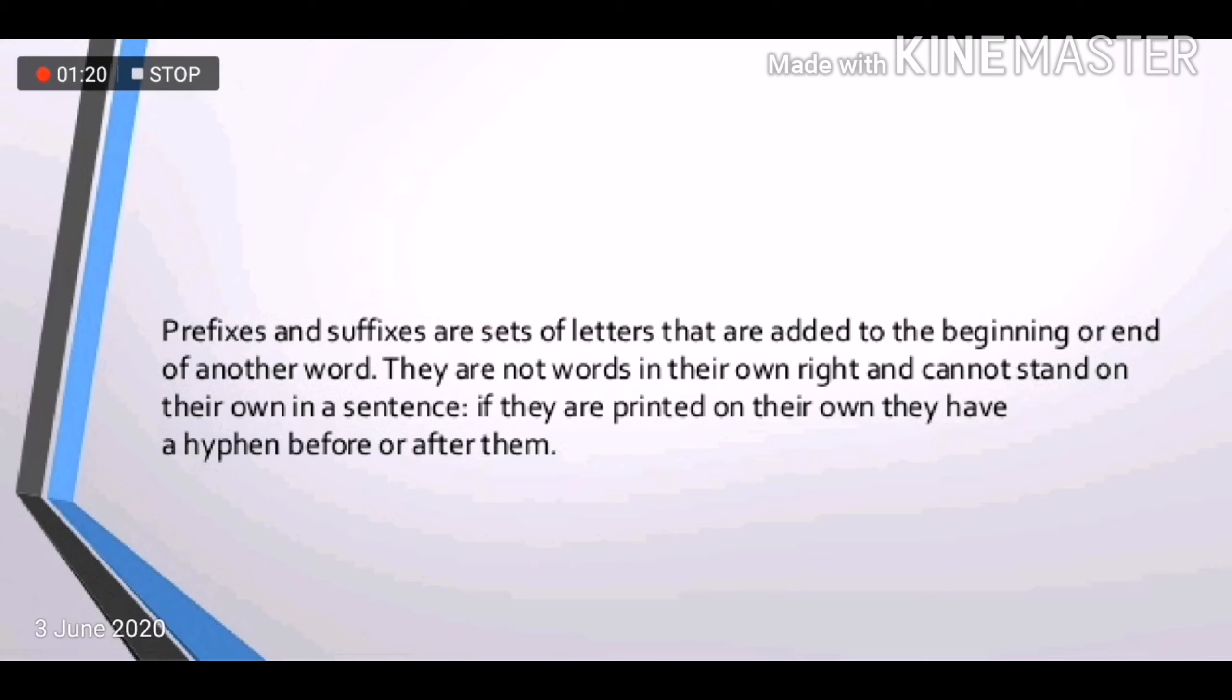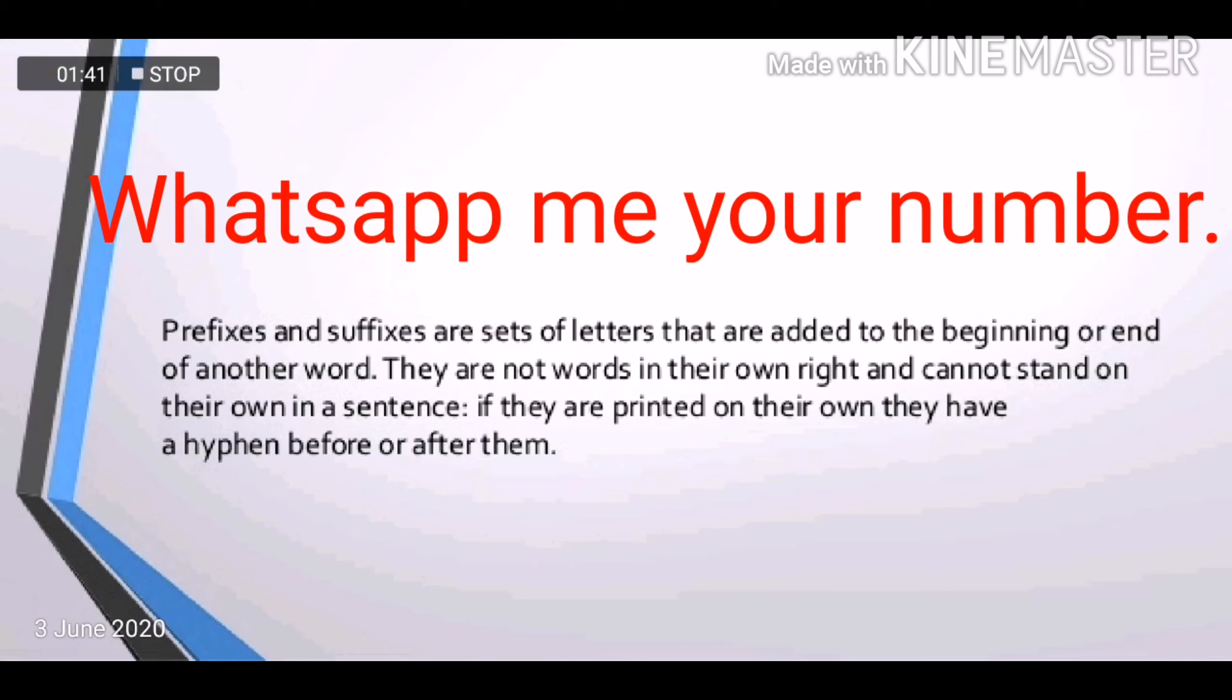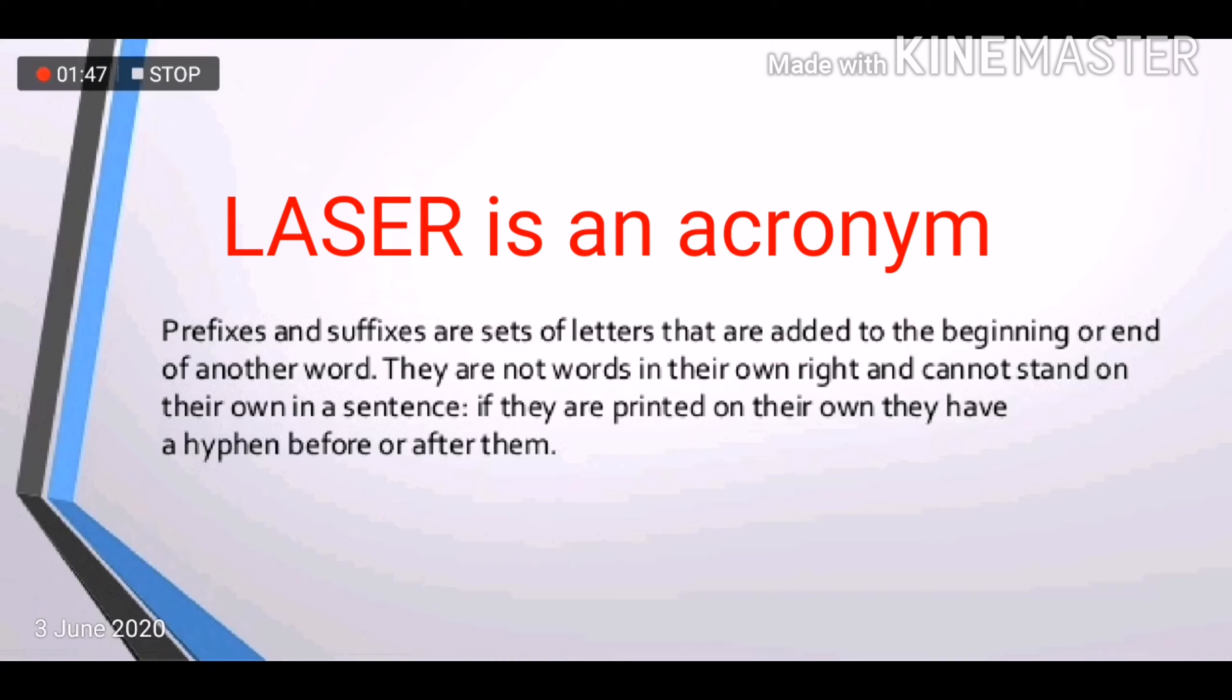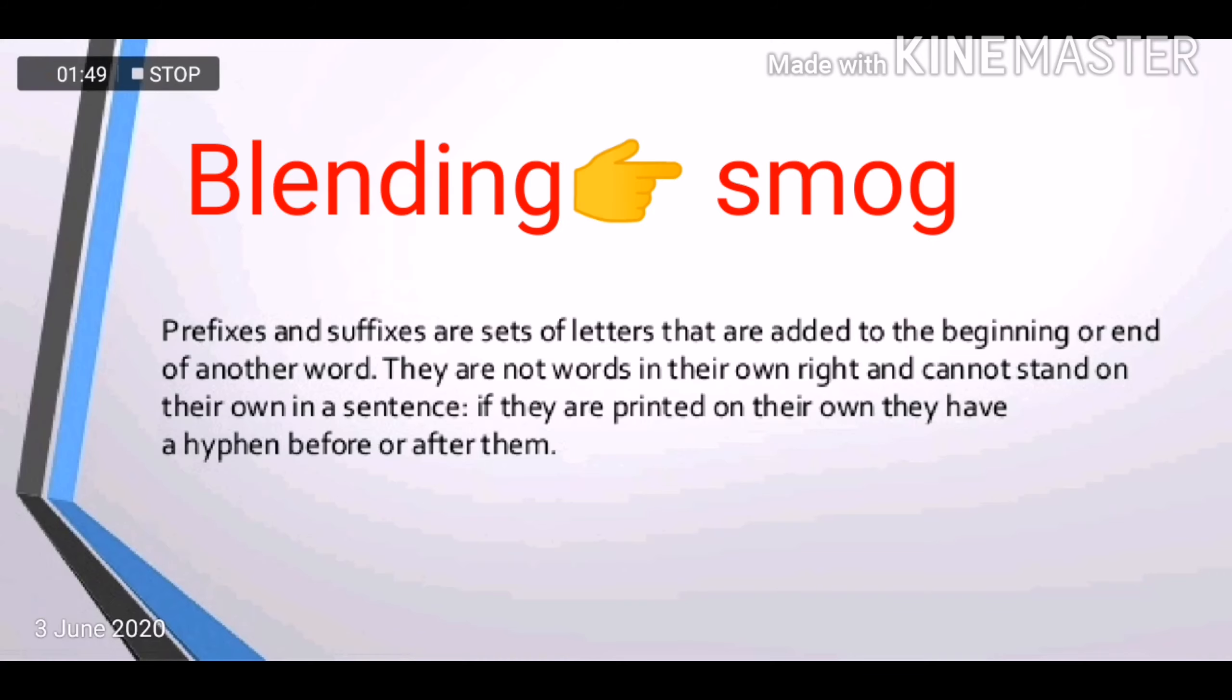And you can find their meanings and you can find these words actually in English dictionaries. Then we have coinage. Similarly, Twitter, WhatsApp, Google are examples of coinage. Then we have, and also let me tell you this, that you can make verbs out of these coinage words. For example, WhatsApp me your number, Google this thing, etcetera.